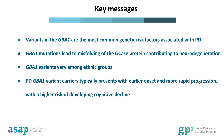In summary, GBA1, along with LRRK2, is one of the most significant genetic risk factors for PD. GBA1 mutations lead to the misfolding of the GCase protein, disrupting the autophagy-lysosomal pathway and contributing to neurodegeneration through the accumulation of alpha-synuclein. Variants of GBA1 exhibit ethnic heterogeneity, and PD patients with GBA1 variants typically present with earlier onset and more rapid progression, along with a higher risk of developing cognitive decline.